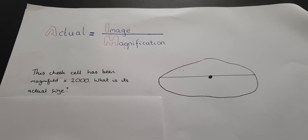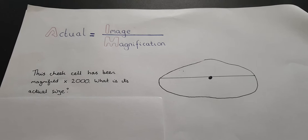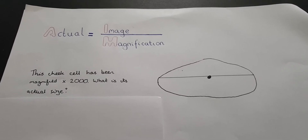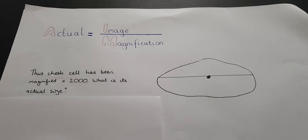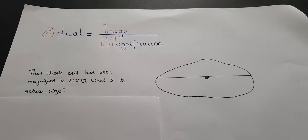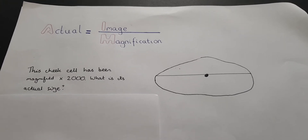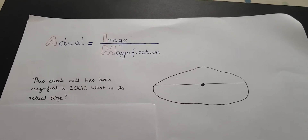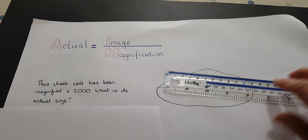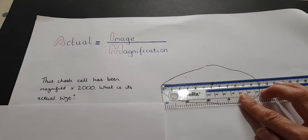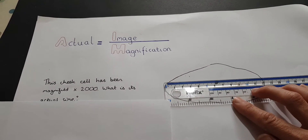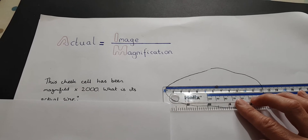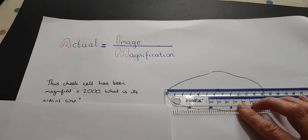In this question, the cheek cell has been magnified by 2,000. What is its actual size? We've been given the image, so we need to measure the image size. We do that with a ruler and measure it in millimeters. In this case, it's 120 millimeters long.